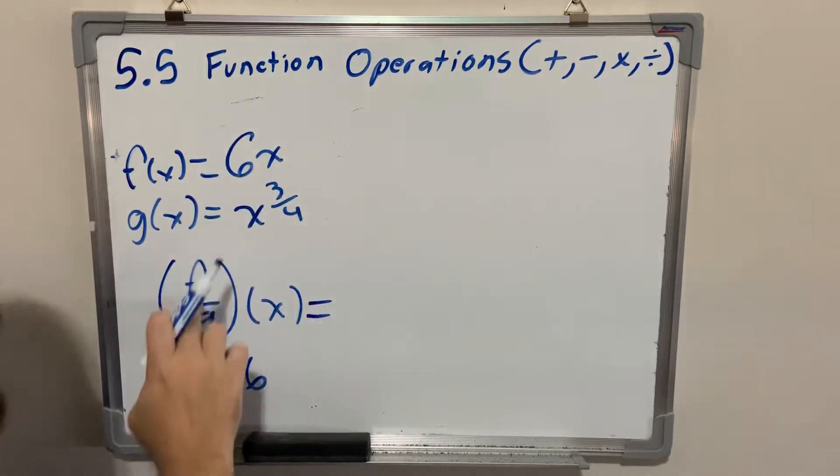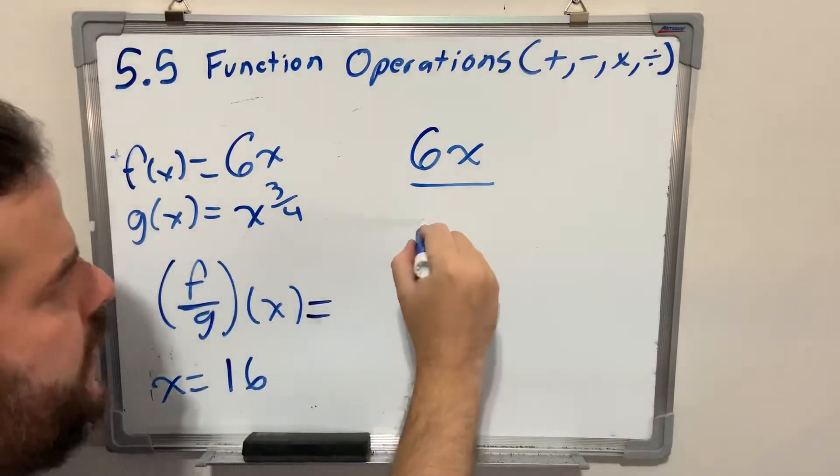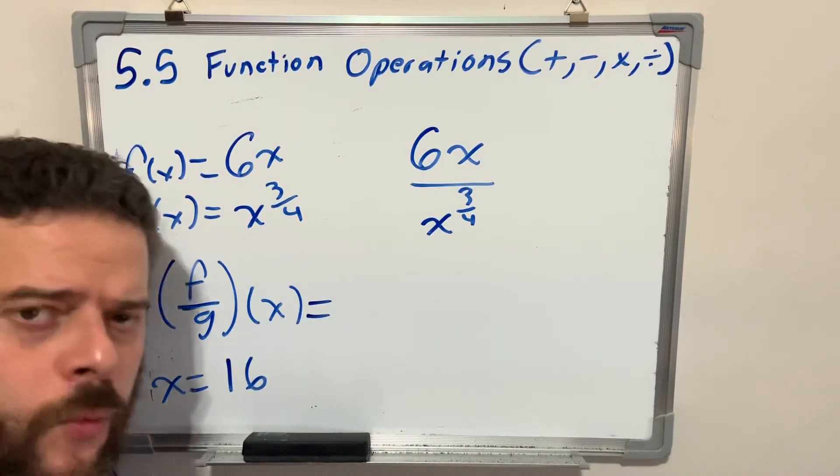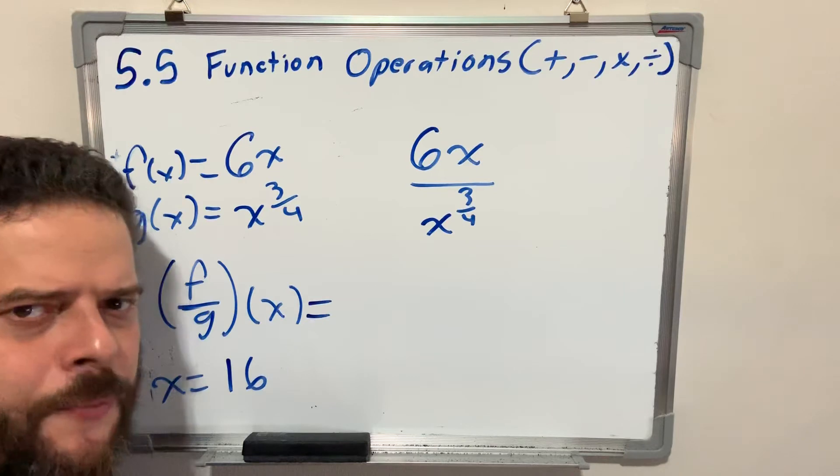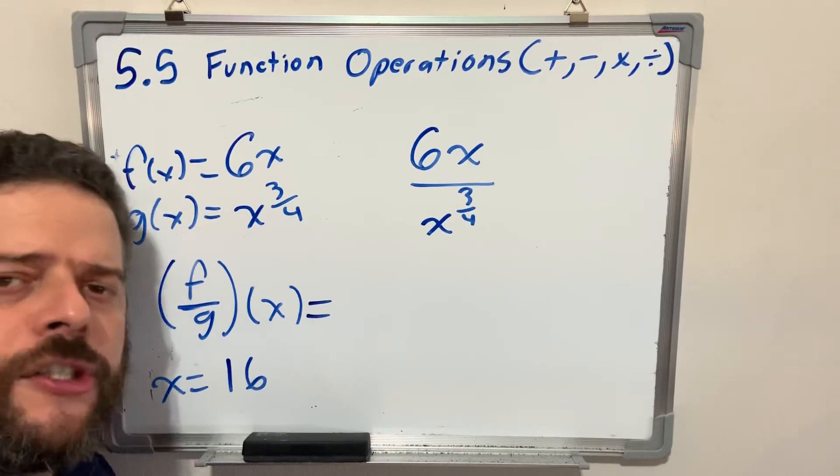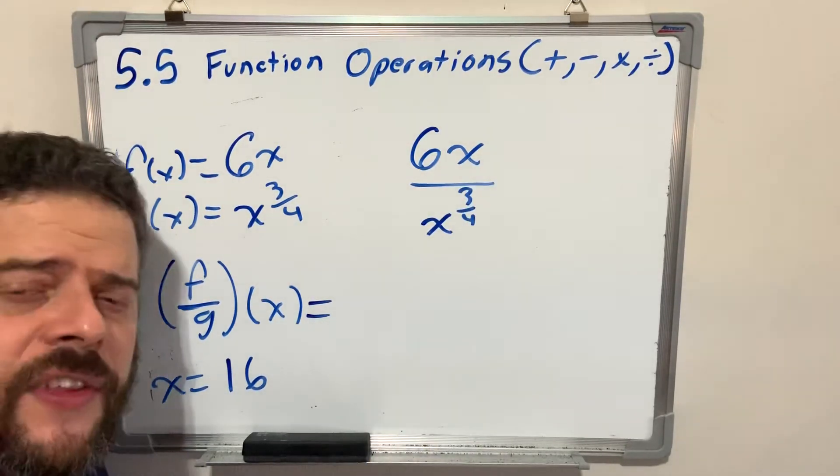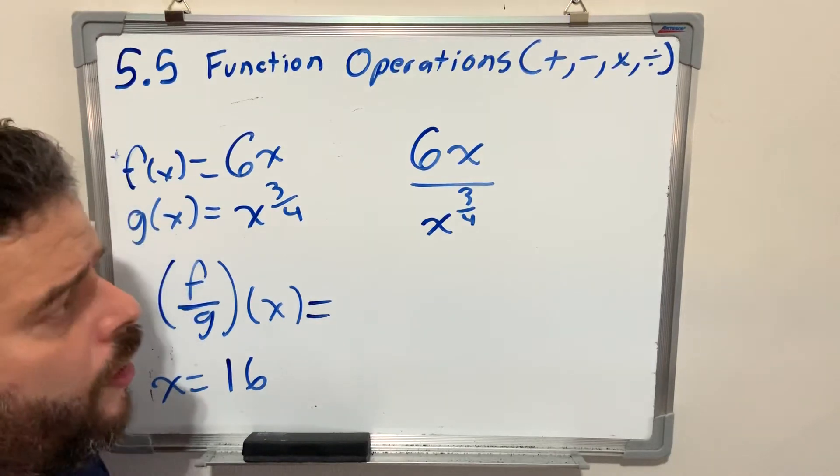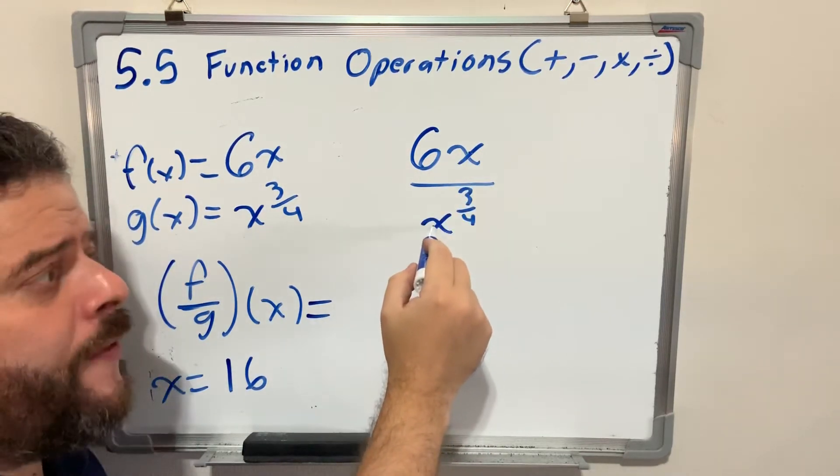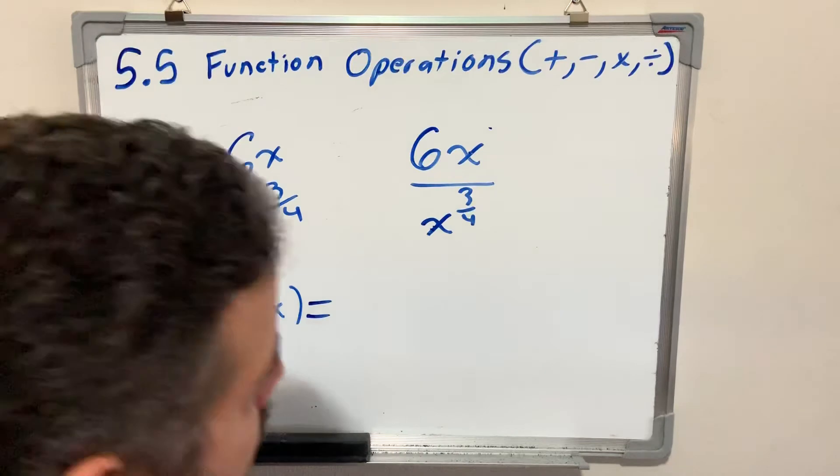Let me plug in my functions where they have to go. This would be 6x, because f is at the top. g of x would be x to the 3 over 4. There are two ways you can work with this. They're going to give you the exact same result, using two different rules for fractional exponents. If I have a fractional exponent in the denominator, I can send it to the numerator and change the sign. Or you can use the normal division rule, which when you have two identical variables, you subtract the bottom exponent from the top exponent. Let's do it both ways.